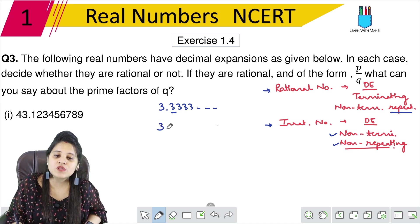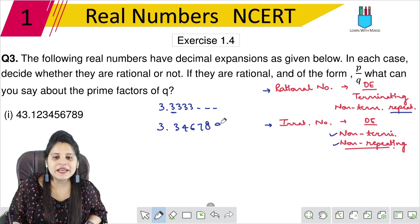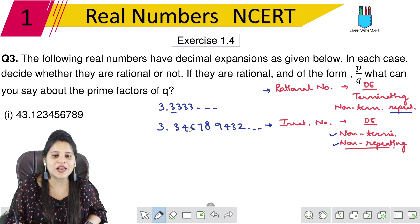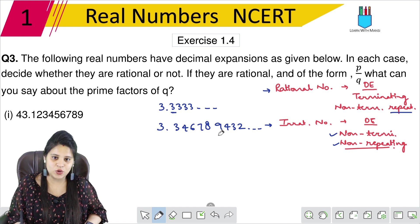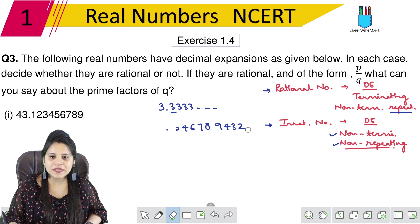Meaning, this decimal expansion is like 3.3, 4, 6, 7, 8, 9, 4, 3, 2. It is going to work and no number is repeating. It is not the same. So it will be irrational.